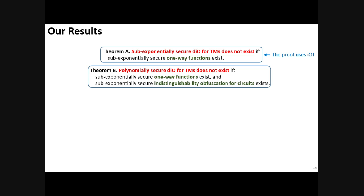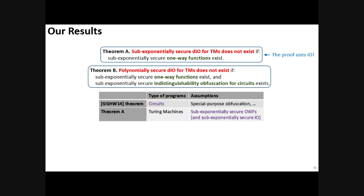Our first theorem actually uses I.O. in the proof. However, we get this assumption for free when proving this theorem assuming that sub-exponentially secure DIO exists by contradiction.